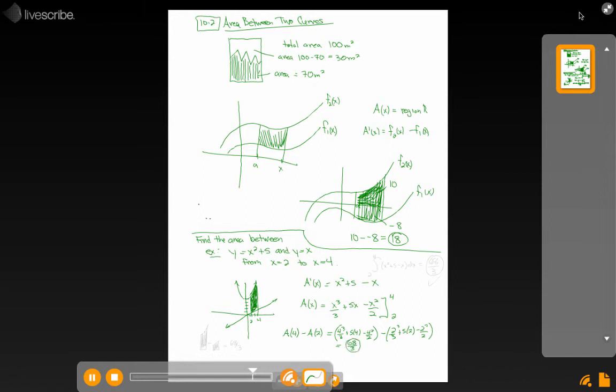That would be the same answer that you would get if you would have found the area under the parabola first from 2 to 4, the bigger area that would look something like that, all the way down to the axis. And then found the small area that would just be under the line y equals x. And if you just subtracted those two, you'd get the same answer of 68 over 3.